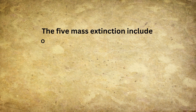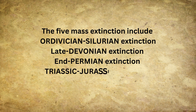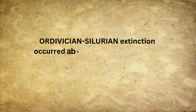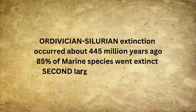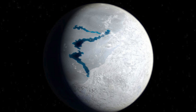The five mass extinctions include the Ordovician-Silurian Extinction, Late Devonian Extinction, End-Permian Extinction, Triassic-Jurassic Extinction, and Cretaceous-Paleogene Extinction, famously known as the K-PG Extinction. The Ordovician-Silurian Extinction occurred approximately 445 million years ago. Scientists estimate that about 85% of marine species went extinct, making it the second largest mass extinction in Earth's history. Shallow marine invertebrates such as brachiopods, crinoids, and trilobites were most affected, with a group of colonial animals called graptolites nearly going extinct.